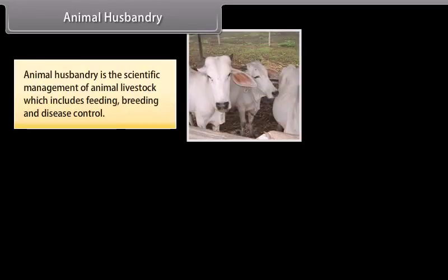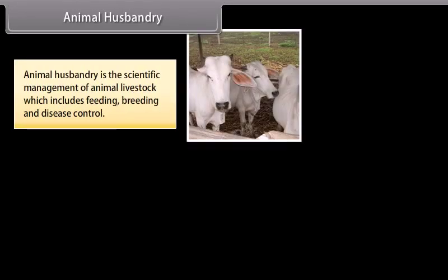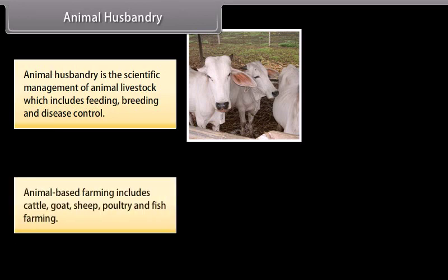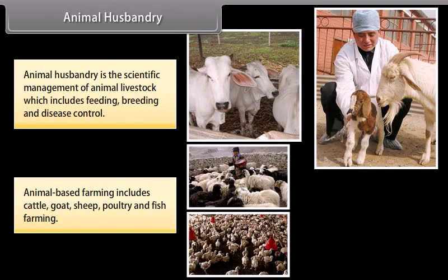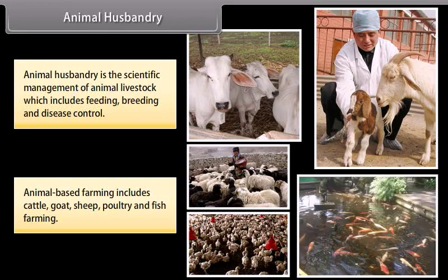Animal husbandry is the scientific management of animal livestock, which includes feeding, breeding and disease control. Animal-based farming includes cattle, goat, sheep, poultry and fish farming.